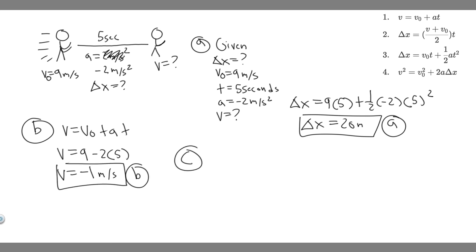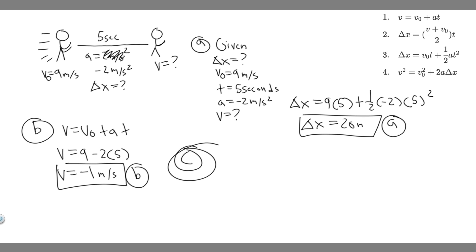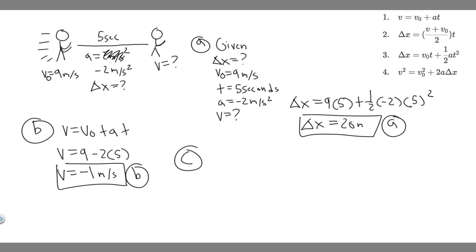Now for part C — evaluate the result, does it make sense? Her final velocity is negative. A negative velocity means she would be traveling in the opposite direction. If she's running a race, why would she run in the opposite direction? So it doesn't make sense. The answer to C is: no, it doesn't make sense, because a negative final velocity means she would be traveling in the opposite direction — positive is to the right, negative is to the left. Those are your answers, and hopefully you found this useful.